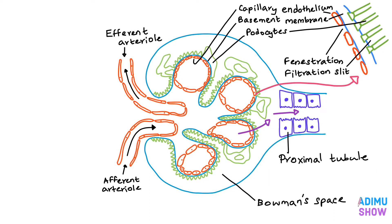Blood filters through these cellular layers and enters into Bowman's space. The filtrate then enters into the proximal convoluted tubules. The proximal convoluted tubule is made up of a single layer of cells. The luminal edge of the cells has many microvilli, which form the brush border.